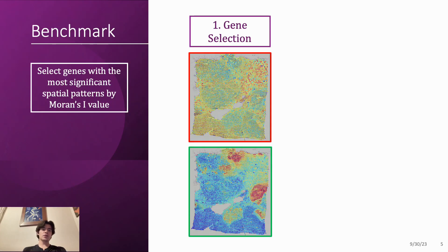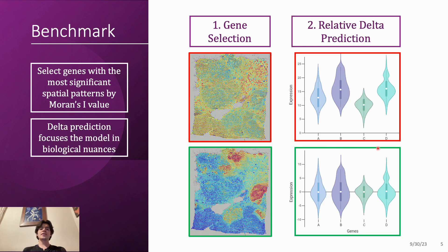So to address this task, we first defined a benchmark with two important points. First, we decided to include just genes with a really significant spatial pattern and second, we decided to supervise only delta changes with respect to the mean expression in a training set.